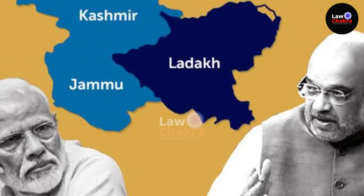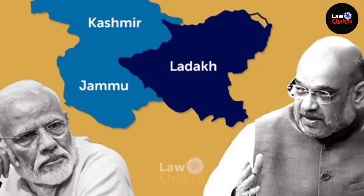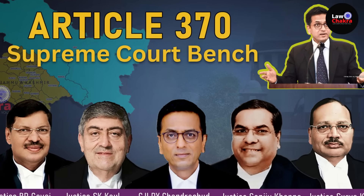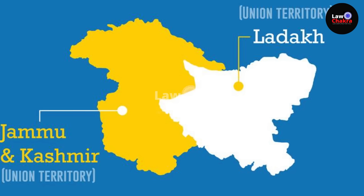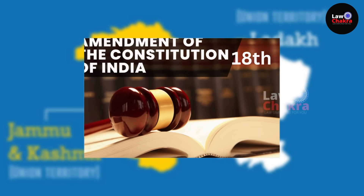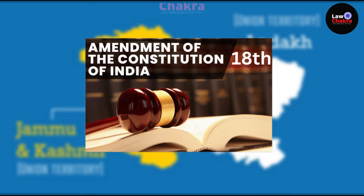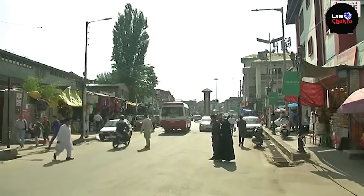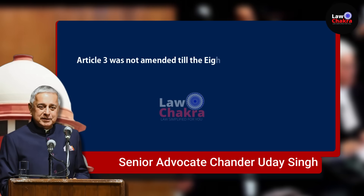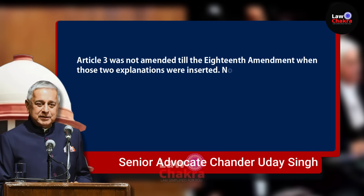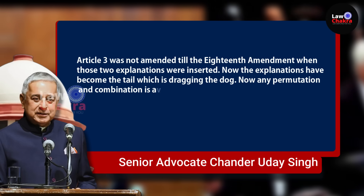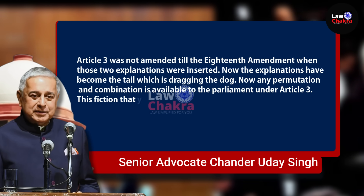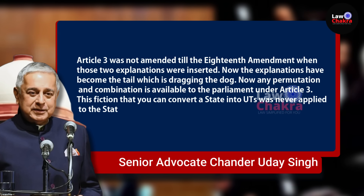ये submit करने के बाद Singh अपने prime contention पर आ गए — क्या Article 3 of the Constitution union को authorize करता है to pass a bill जिसने state को union territory में convert कर दिया? Constitution Bench को बताते हुए कि Constitution की 18th amendment ने Article 3 को amend किया था to also include within its ambit the union territories, लेकिन ये 18th amendment Jammu and Kashmir पर applicable नहीं था on 5th of August 2019। He stated: 'Article 3 was not amended till the 18th amendment when those two explanations were inserted. Now any permutation and combination is available to the Parliament under Article 3. This fiction that you can convert a state into UTs was never applied to the state of Jammu and Kashmir।'